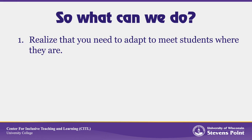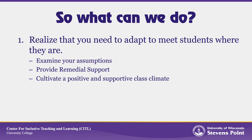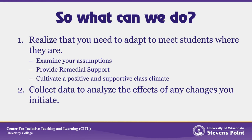So what can you as an instructor do about this? You must begin by accepting that you have to adapt your teaching to meet your students where they are. You may have to re-examine your assumptions, provide remedial support, and work more to cultivate a positive and supportive classroom climate for your students. Secondly, you'll have to collect data to analyze the effects of any changes that you make in the way that you're teaching, so that you'll know whether they're helping or harming your students.